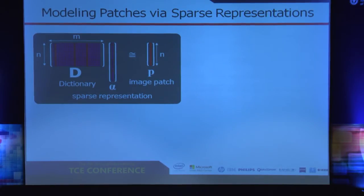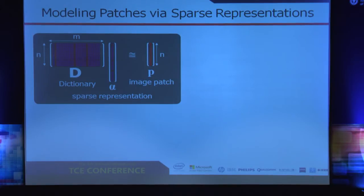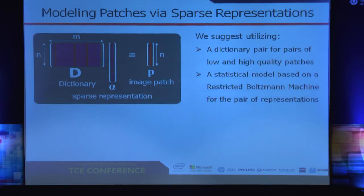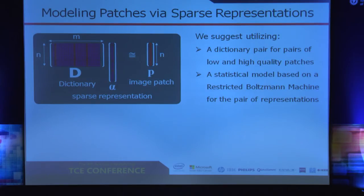Each atom is multiplied by a non-zero coefficient, and the non-zero coefficients are organized in a sparse representation vector alpha. For single image super resolution, we make use not only of one dictionary but of a dictionary pair — one for low-quality patches and one for high-quality patches. We have a statistical model based on a restricted Boltzmann machine, a graphical model well-known in the neural network field, suggested about 30 years ago by Smolensky and Hinton.